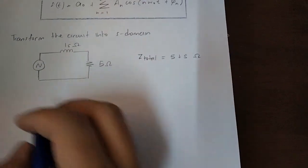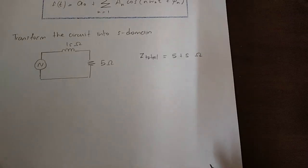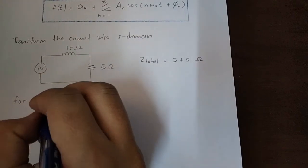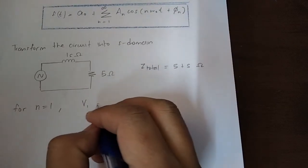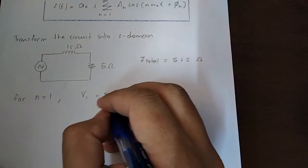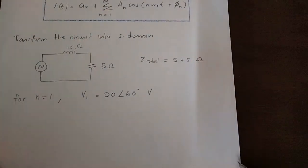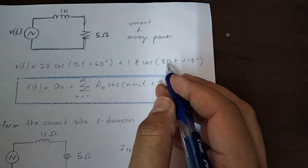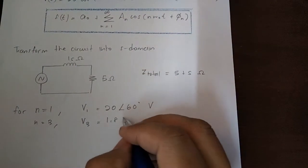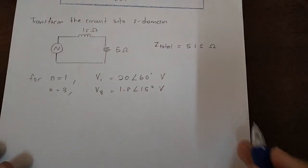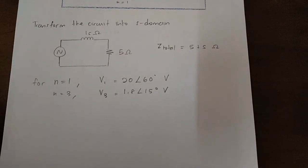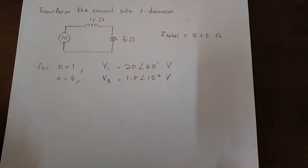We have to calculate the current for every component. For n equals 1, V1 is 20 with angle 60°V. For n equals 3, V3 is 1.8 with angle 15°. We list out every voltage component for n equals 1 and n equals 3, so we can then calculate the current for each component.